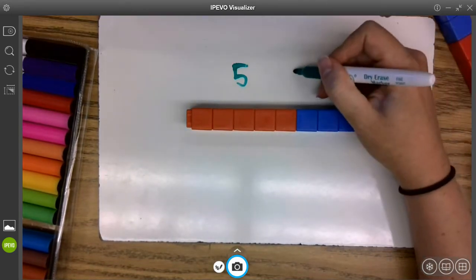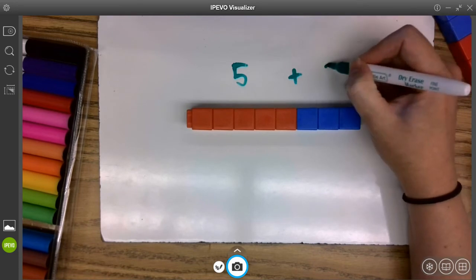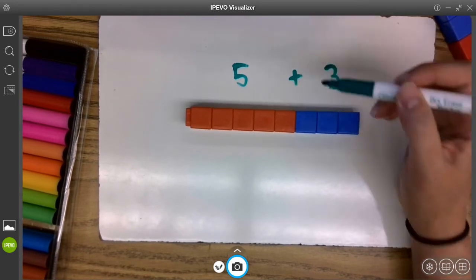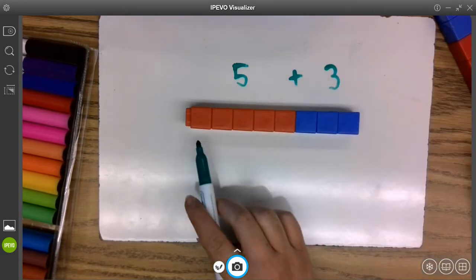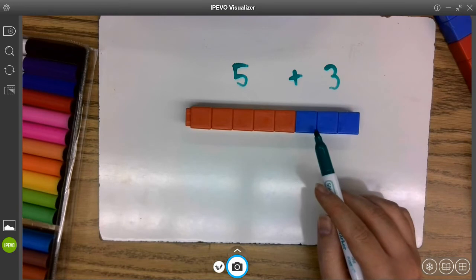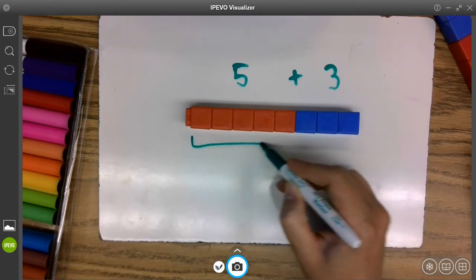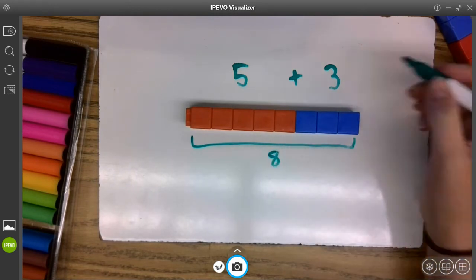I added one, two, three more. Notice that when I'm adding, I'm joining the numbers together. I started with five and added three, joined together, beginning to end, I have a total of eight.